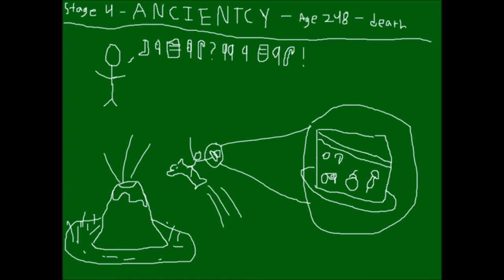Lastly, the Ancient stage begins at age 248 and lasts until death, which is sometimes shortly afterwards. Somewhere along the line, the readings of The Giving Tree have caused the only communication form to be hieroglyphics.